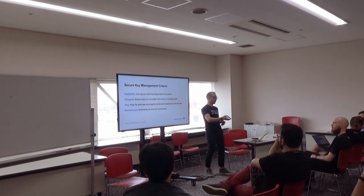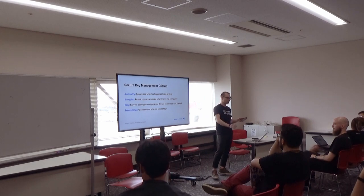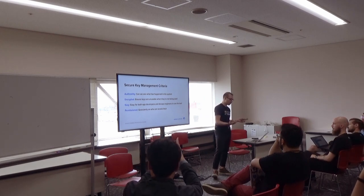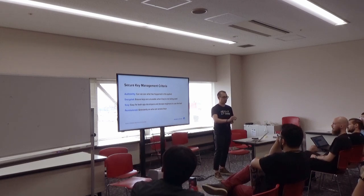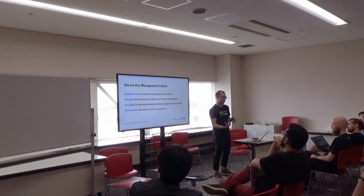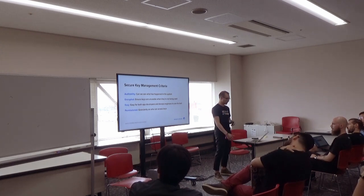There are four main criteria we have. We have auditability — can we see what happened, can we see who accessed at what time? We have encryption — are these keys unusable when they're not being used? And I want to note, the keys I'm talking about here are the keys to encrypt the data, not the public-private keys. This is taking encryption keys and using those to encrypt and securely store your private keys.